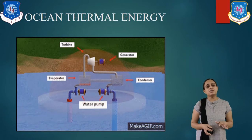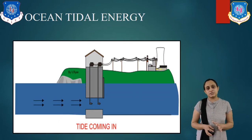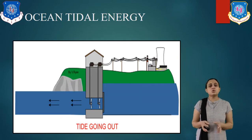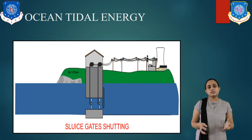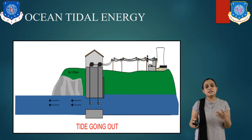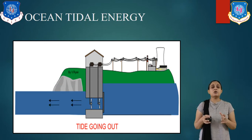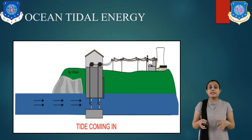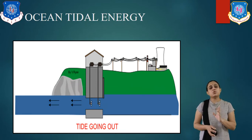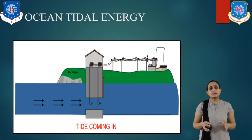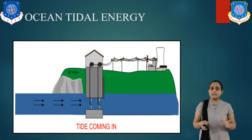This is the working principle of ocean thermal energy. Now, tides in the ocean are due to the combined gravitational force of the moon and the sun on the earth. There is a periodic rise and fall of sea water level during high tides and low tides. This difference in water level of about 10 meters or more can be used to operate a turbine, which in turn generates electricity. There are two types of ocean tidal power plants: single basin power plants and double basin power plants.